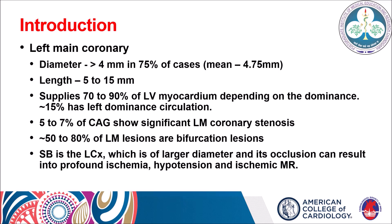For a bifurcation lesion like the left main, the side branch is the left circumflex, which is large. In case there is any stenosis or occlusion of the left circumflex as a side branch during percutaneous intervention of the left main, it can result in profound ischemia, hypotension, and ischemic mitral regurgitation. Therefore, it is very important for left main PCI to have enough reserve flow across the side branch, that is the left circumflex.